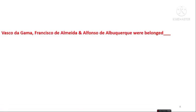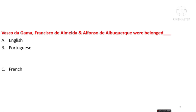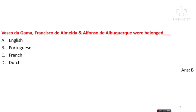The next question is: Vasco da Gama, Francisco de Almeida, and Alfonso de Albuquerque belonged to which country — English, Portuguese, French, or Dutch? The answer is Portuguese. All these persons belonged to Portugal.